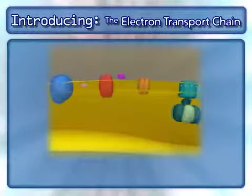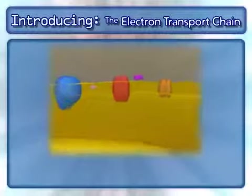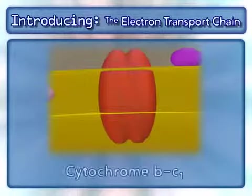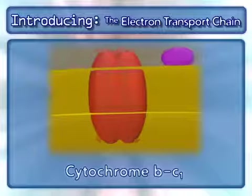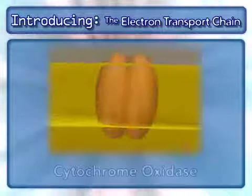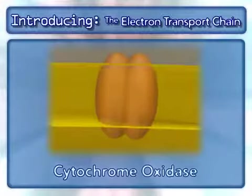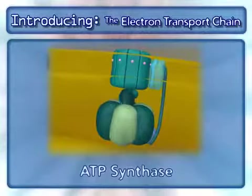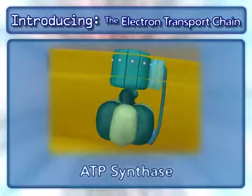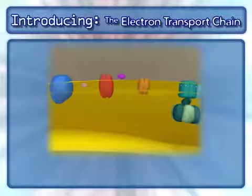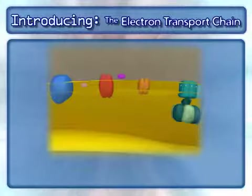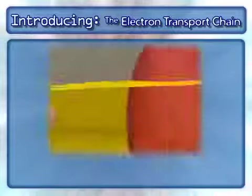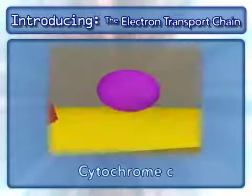The following complexes are found in the electron transport chain: NADH dehydrogenase, cytochrome BC1, cytochrome oxidase, and the complex that makes ATP, ATP synthase. In addition to these complexes, two mobile carriers are also involved: ubiquinone and cytochrome C.